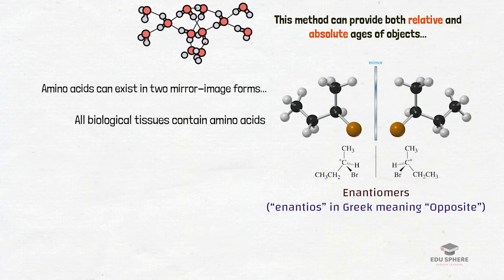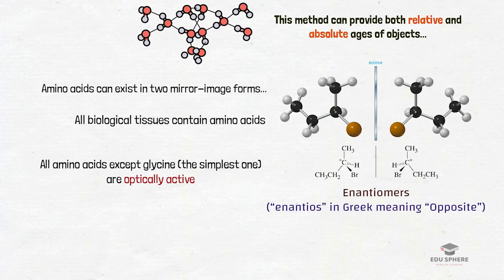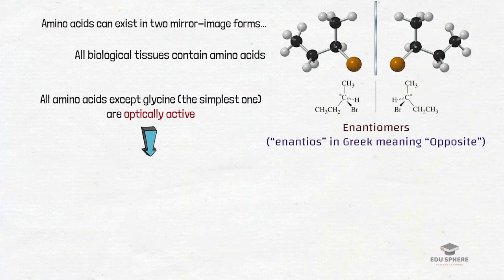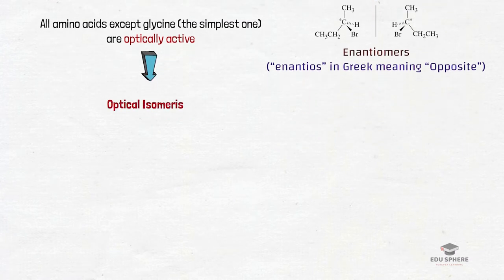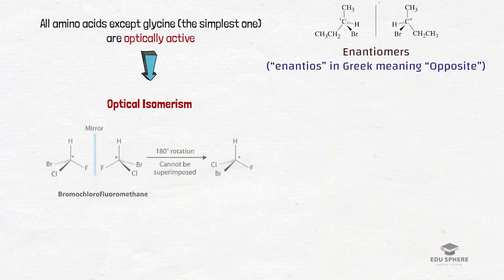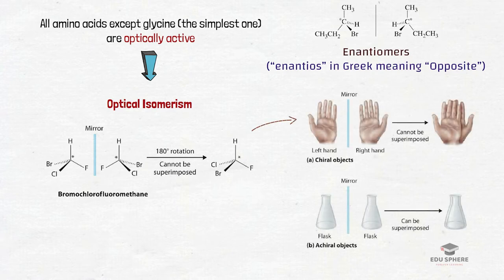This is also a fact that all amino acids except glycine, which is the simplest one, are all optically active. Now what does this optically active imply? Optically active compounds are those that can show optical isomerism. Do remember that two optically active isomers will rotate polarized light in opposite directions and they will be non-superimposable mirror images of each other, just like our left and right hands.